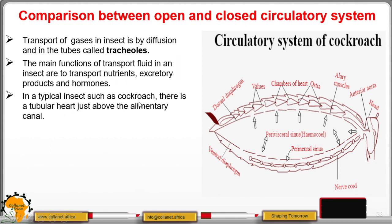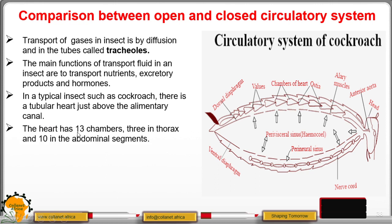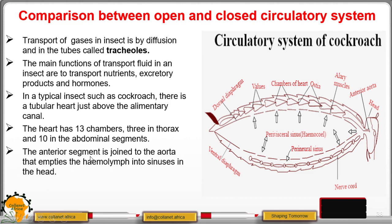In a typical insect such as the cockroach, there is a tubular heart just above the alimentary canal. The heart has 13 chambers — three in the thorax and ten in the abdominal segments. These chambers contain openings called ostia, which are controlled by valves. The anterior segment is joined to an aorta that empties the haemolymph into sinuses in the head.